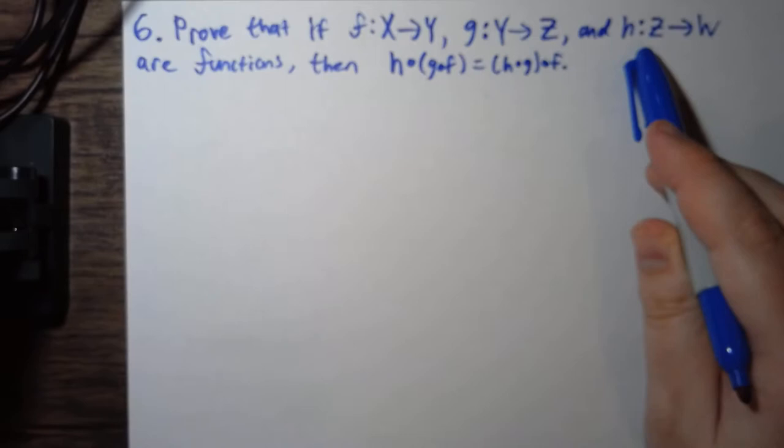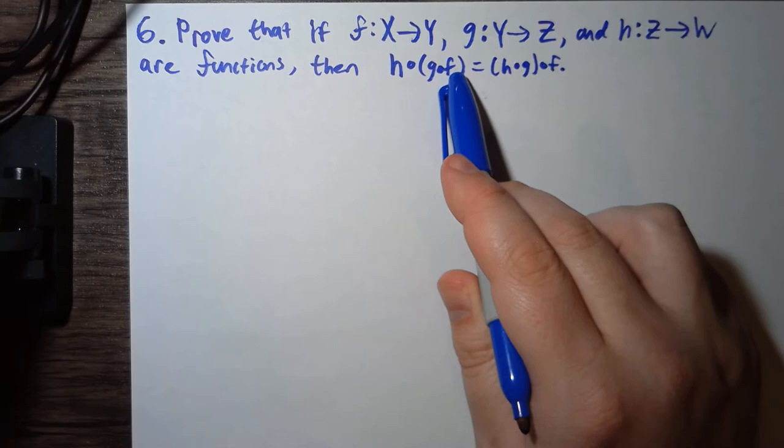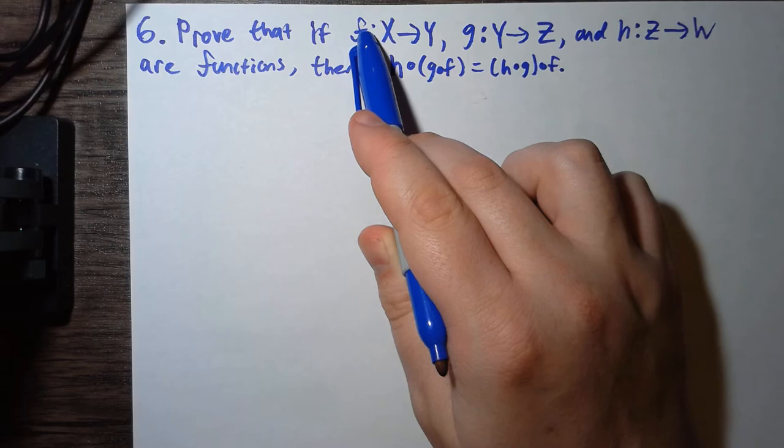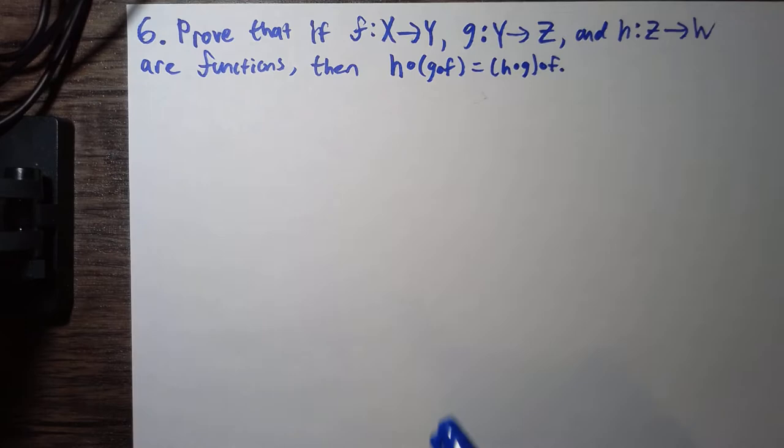So first, let's make sure these make sense. So h takes in elements of Z and outputs elements of W, and then g∘f takes in inputs of X and outputs elements of Z. So these will be functions from X to Z.